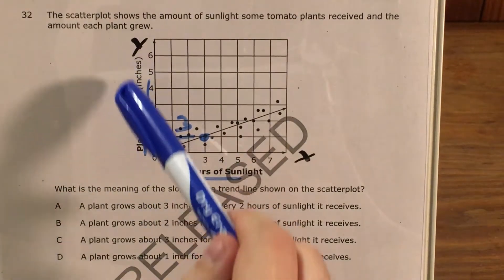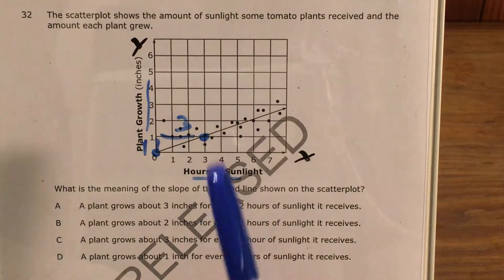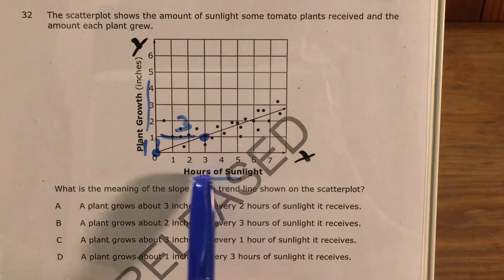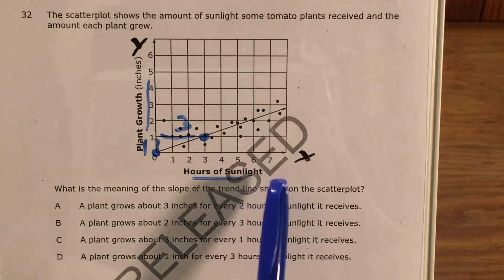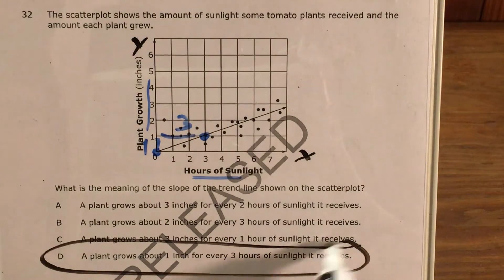1 inch. Inches is our vertical variable, and 1 inch was our vertical change. For 3 hours of sunlight, hours of sunlight is our horizontal x variable, and that was our horizontal change on the line of best fit. So that tells me that my answer is choice D.